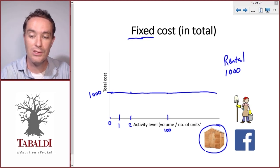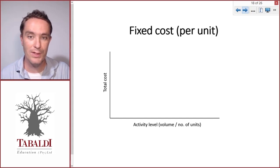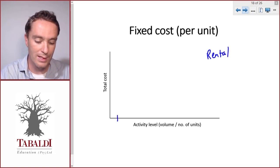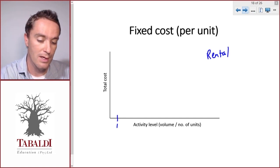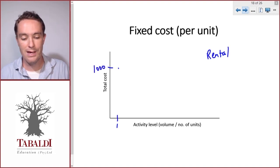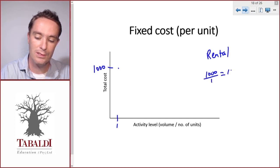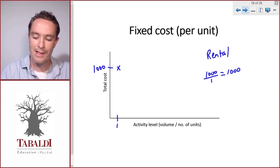So let's look at fixed cost per unit. We can use the same example of the rental. So if we make one table, our first table, our rental will be a thousand per month, and per unit that would be a thousand divided by the one unit, so one thousand per unit. It's quite an expensive table.